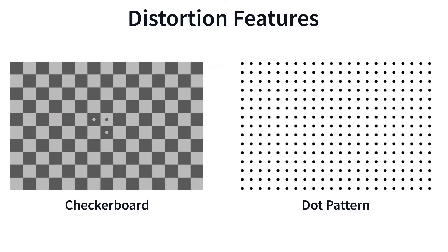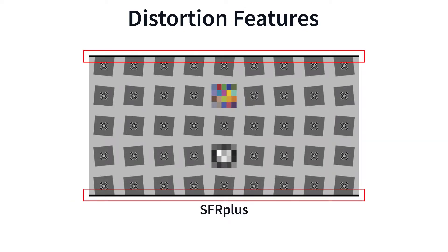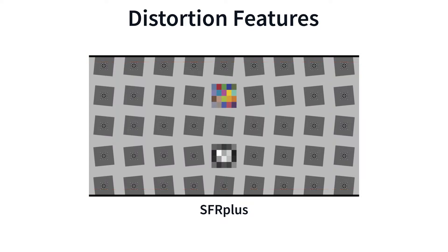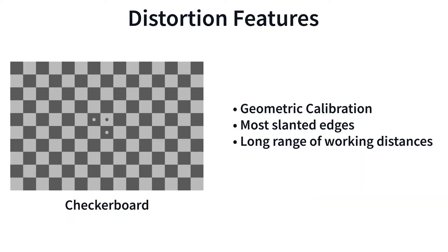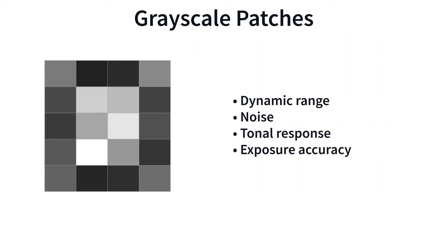Checkerboards and dot patterns can be used for measuring distortion and chromatic aberration. Bars included on SFR Plus can also be used to measure distortion. Checkerboards can also be used for geometric calibration.